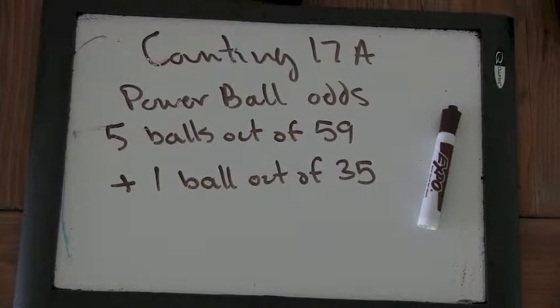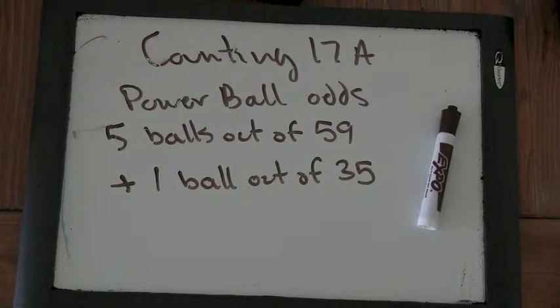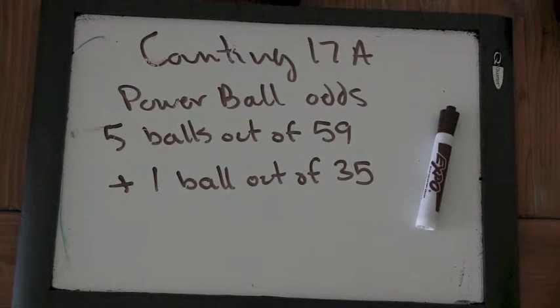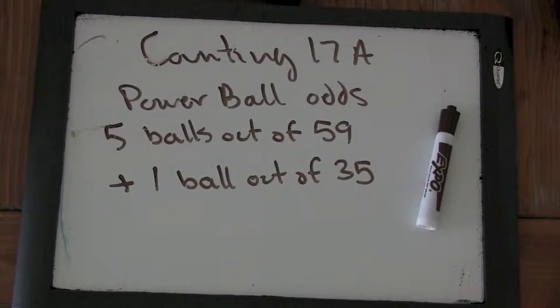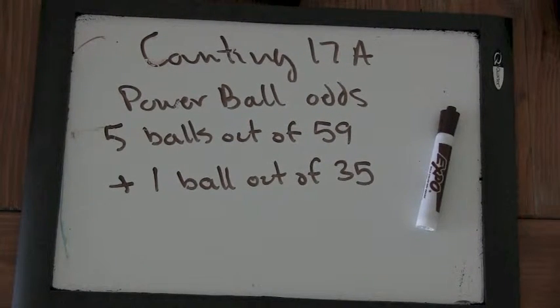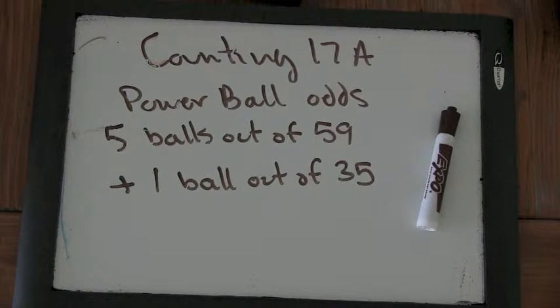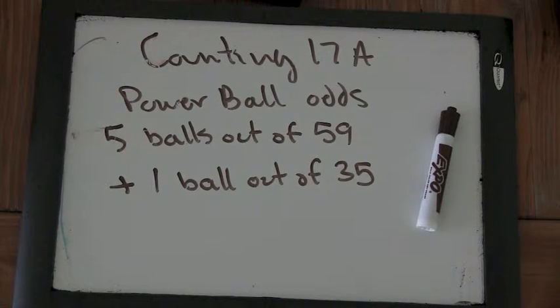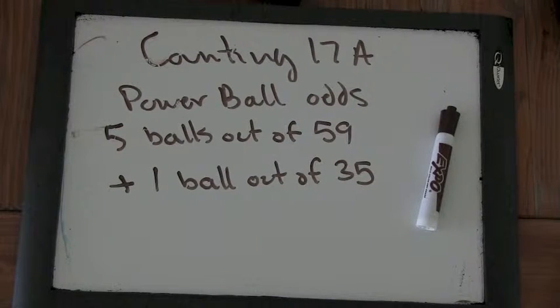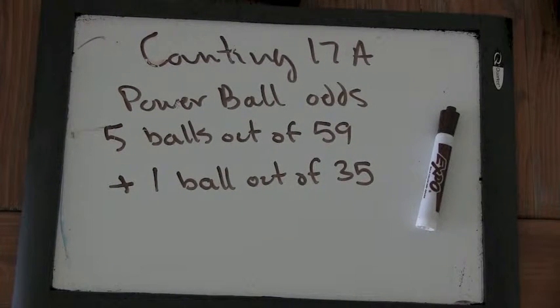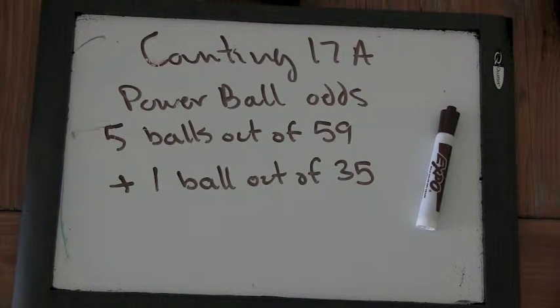Okay, good morning, welcome to Counting number 17A. So today we started a new chapter in our Counting and Probability book called Committees and Combinations. And so we learned a little bit more about the difference between when order matters and when order doesn't matter.